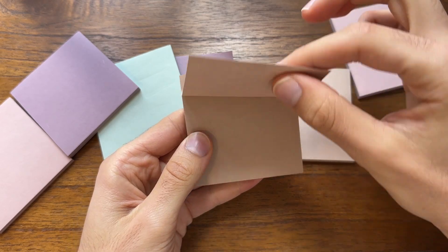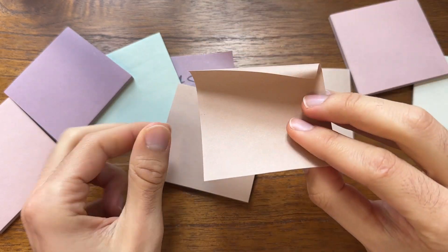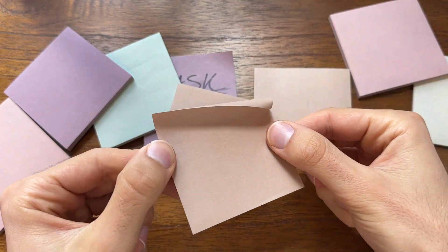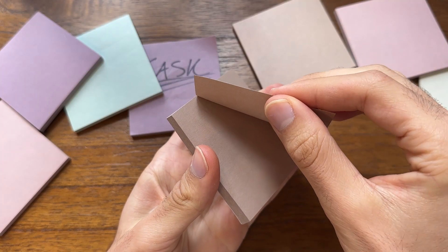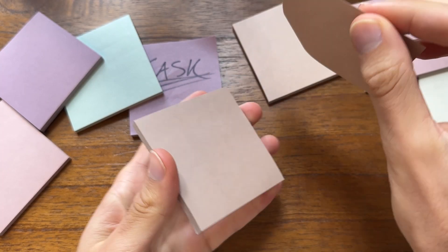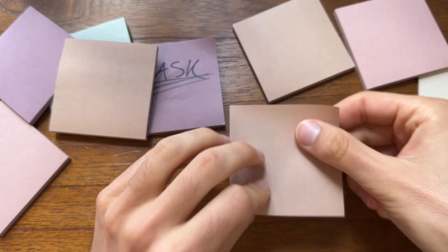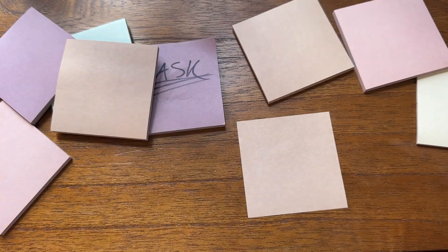Also, pro tip, you're not supposed to rip these off like this, because it creates bending in the adhesive, as you can see. And then when you stick it, it will kind of be floating up. You're actually supposed to remove them to the side like this, which greatly limits the amount that they bend, and then they'll stick on your surface much flatter.